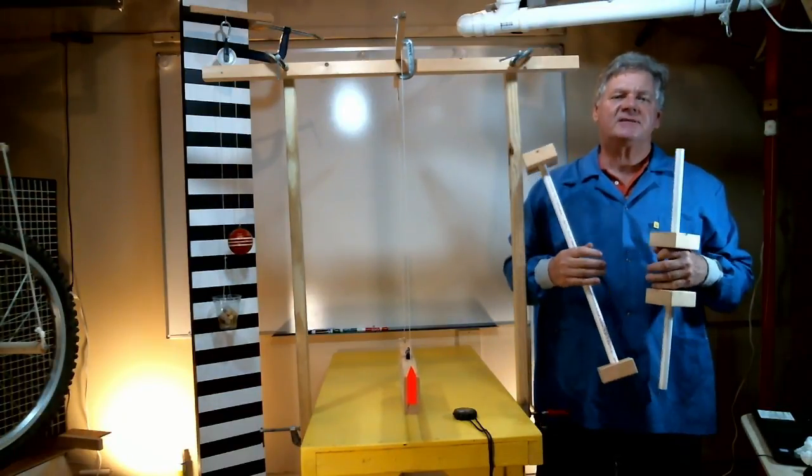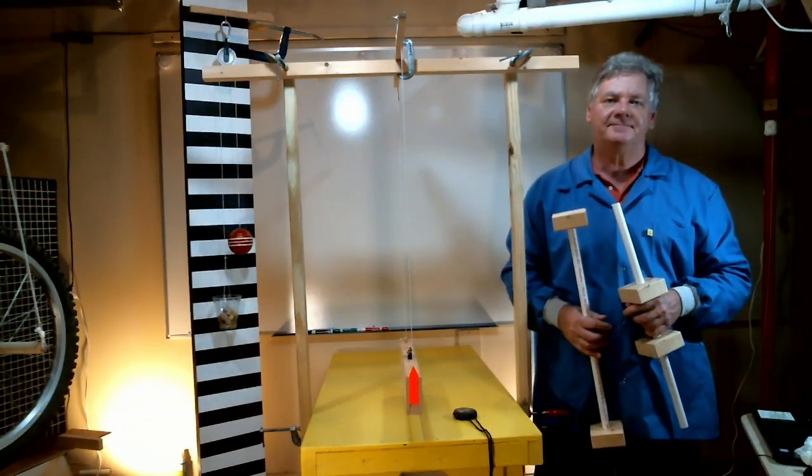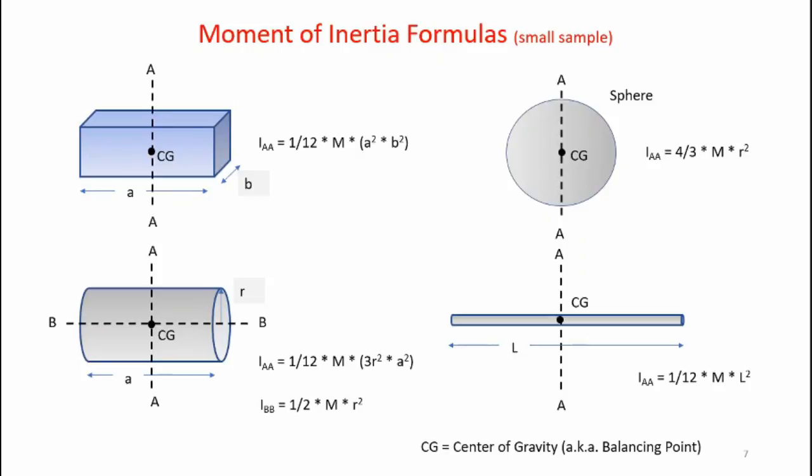Now let's take a look at some basic equations that allow us to calculate the MOI of some simple shapes. I have multiple configurations here: a block, a cylinder, a sphere, and a narrow rod. Now if you examine these equations you notice that they're all a function of the square of the length dimensions. So as the radius of these things increase or they get bigger the inertia increases by the square of the change of those dimensions.